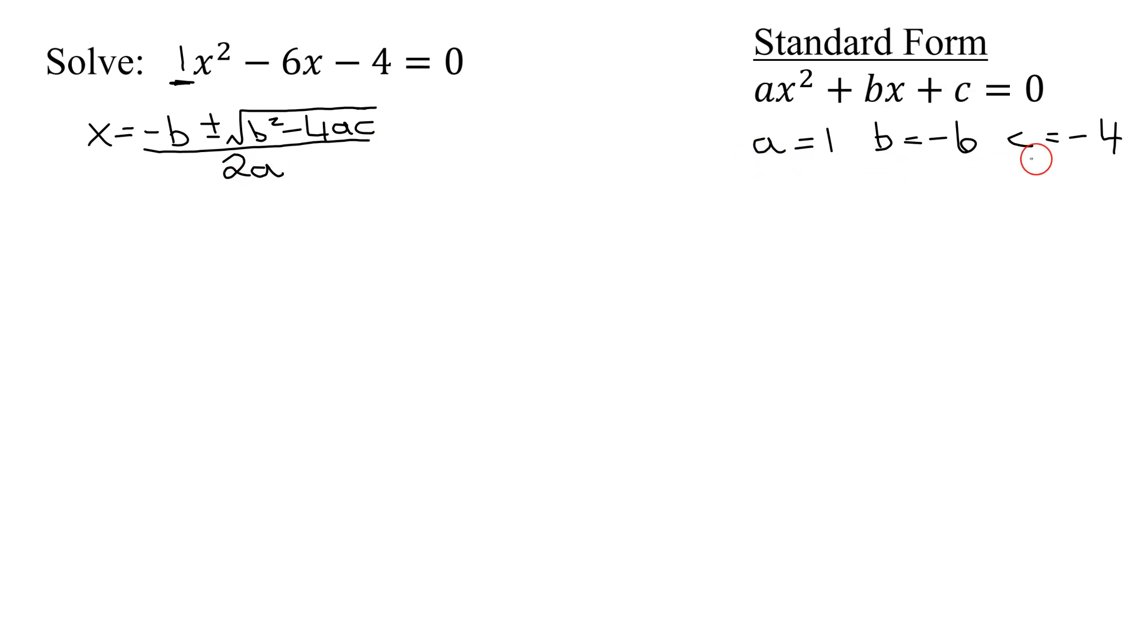Now all we have to do is plug these numbers into the formula. So x equals the opposite of b. So b is negative 6. So it's the opposite of negative 6 plus or minus the square root of b squared. b is negative 6 all squared minus 4 times a.